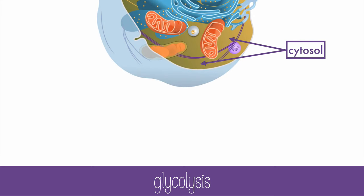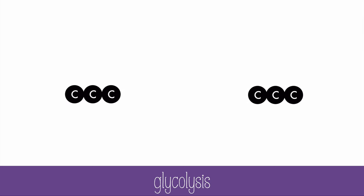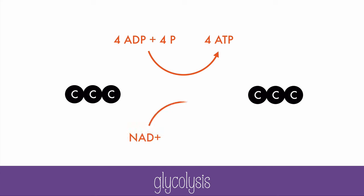No oxygen is needed for this. During glycolysis, the 6-carbon glucose molecule is broken in half and rearranged to make 2 pyruvic acid molecules. The process requires 2 ATP to get started, but ultimately it produces 4 ATP from ADP and phosphate, and it produces 2 NADH from NAD+.